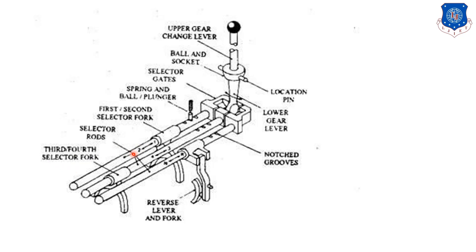One rod is used for first and second gears — when it moves in one direction, that is second gear; when it moves in the other direction, that is first gear. Similarly, one rod handles third and fourth gear, and another handles reverse and fourth gear. When engaging gears: for first gear it moves in one direction on the shaft; for second gear it moves in the other direction. For reverse gear and fourth gear, those are provided with the help of the third rod. Notched grooves are provided, and this is the reverse lever and fourth gear selector.